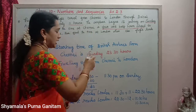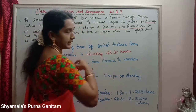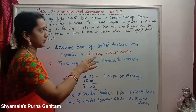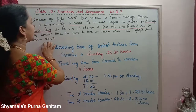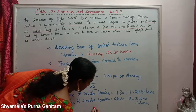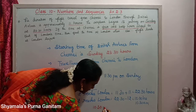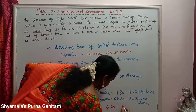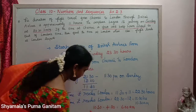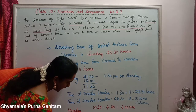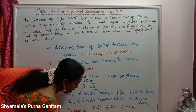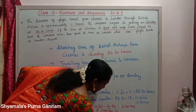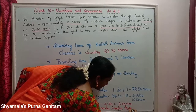But Chennai is 4 and a half hours ahead of London. So we subtract 4.5 hours from the Chennai arrival time: 10:30 a.m. minus 4:30 gives 6:00 a.m. Therefore, the flight lands at London airport on Monday at 6:00 a.m.